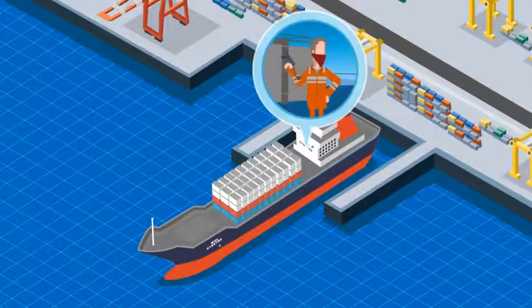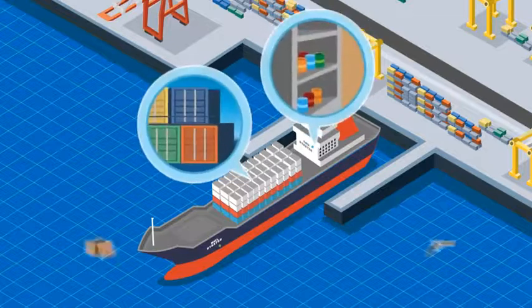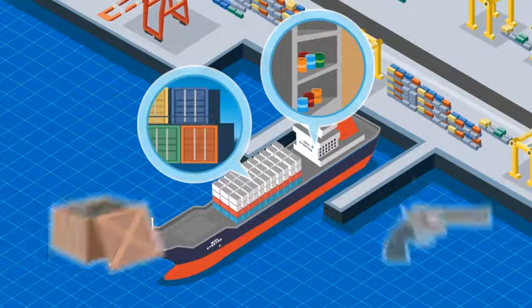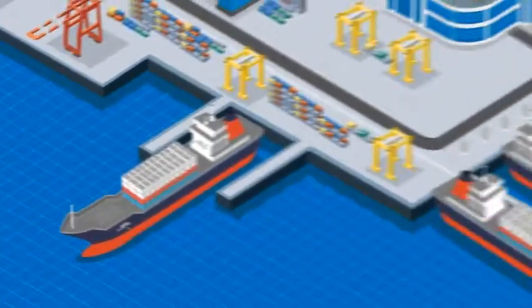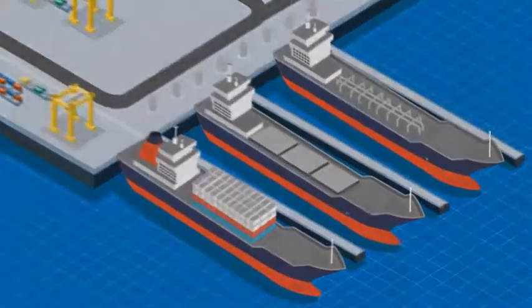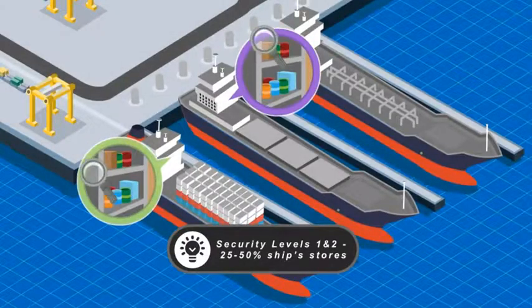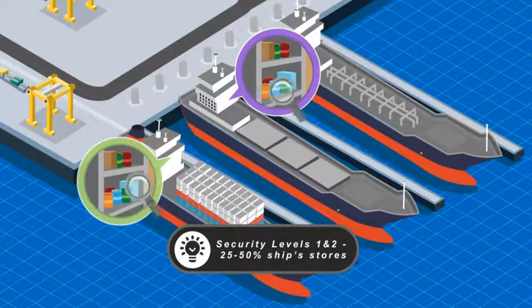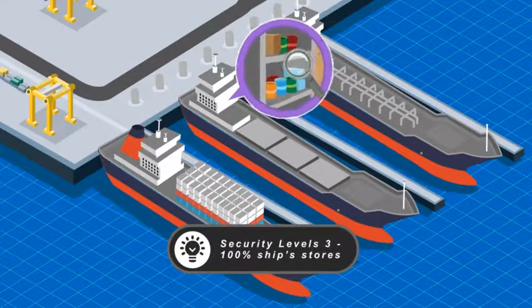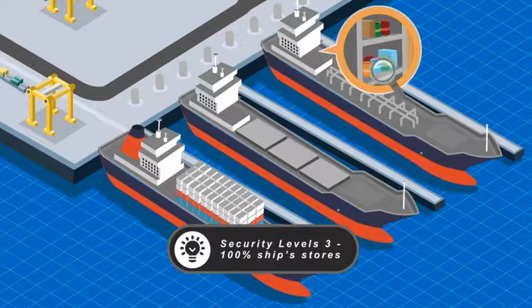Prohibited weapons are not only brought on board by embarking personnel. They are sometimes transported on via cargo during loading or with the ship's stores. In order to avoid weapons entering the ship through the ship's stores, it is recommended that you verify and inspect 25-50% of ship's stores at security level 1 and 2, increasing this to 100% at security level 3.